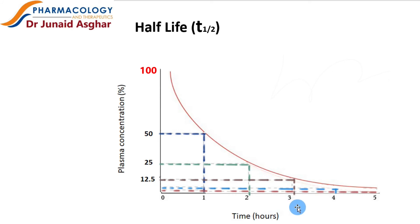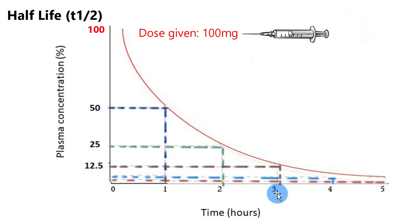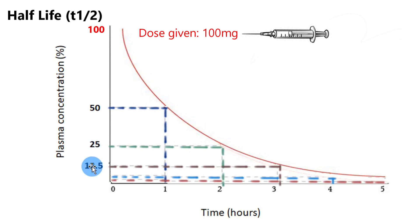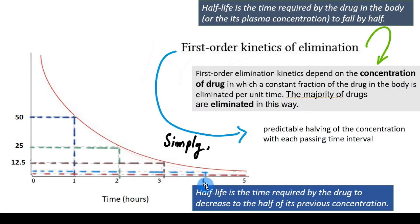After three hours — or three half-lives — we only have 25 mg of the drug left. Half of that is 12.5 mg, so we go down to 12.5 mg or 12.5% in the third half-life period. Interestingly, in the first half-life we eliminated 50 mg, in the second we eliminated 25 mg, and in the third we eliminated 12.5 mg — because a constant fraction of the drug is eliminated per unit time, following first-order kinetics.